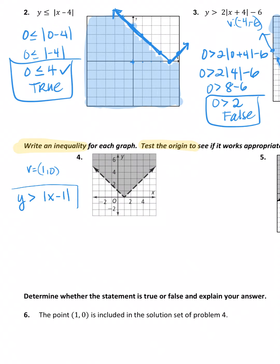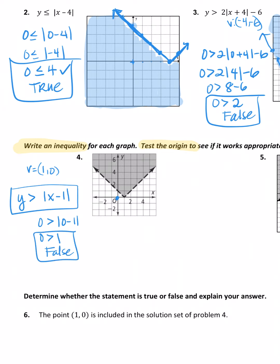Our equation is y > |x − 1|. We know from the graph the origin falls outside the shaded area, so it should give a false statement. Let's test: is 0 > |0 − 1|? That's |−1|, which equals 1. Is 0 > 1? No, that's false. We tested it and our equation seems correct.